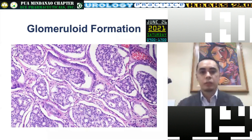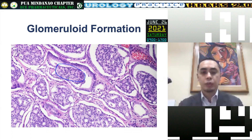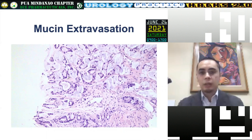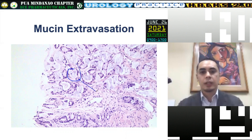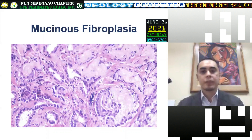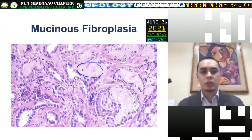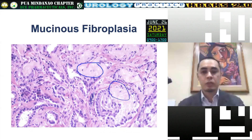Next would be glomeruloid formation — when we have a cribriform structure attached at one point to the wall of an atypical gland, this is automatically cancer and automatically pattern four. You can also have mucin extravasation; a normal prostatic gland would not produce mucin, so if you have mucin — even intraluminal — you are suspicious for cancer. If that mucin goes out into the surrounding stroma, that would be malignancy. Next is mucinous fibroplasia, related to mucin extravasation, where fine fibrillary areas form as a reaction to the foreign body mucin, inducing collagenous micronodules — another absolute indicator of malignancy.